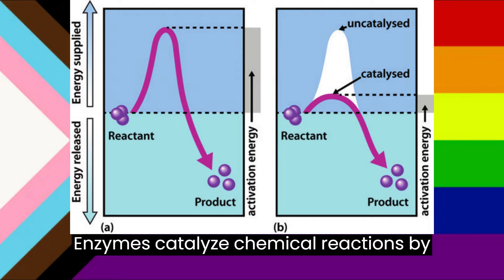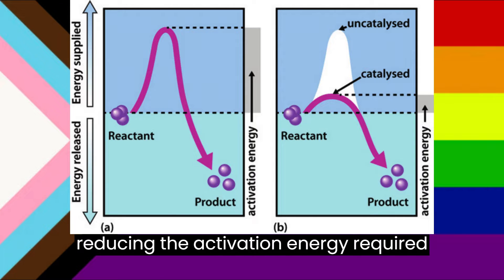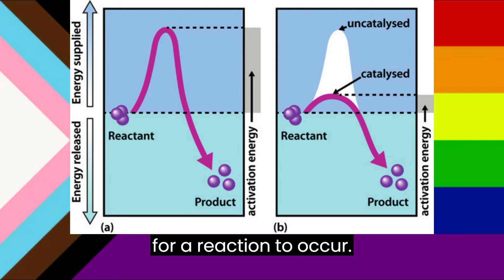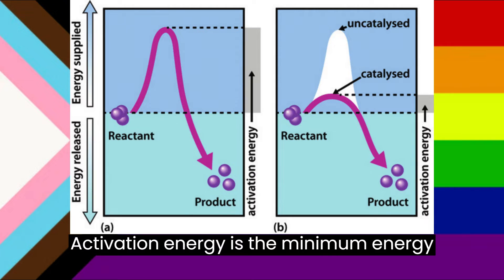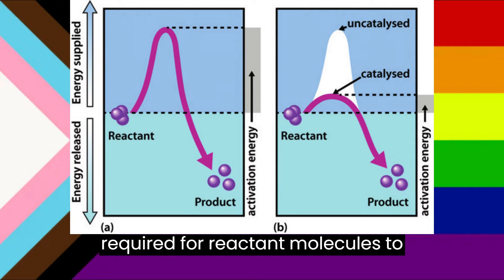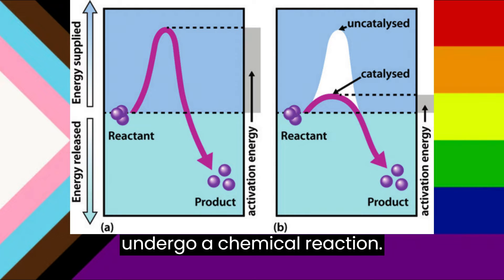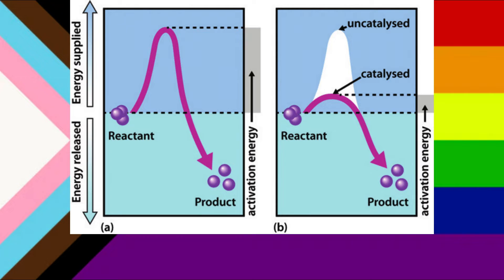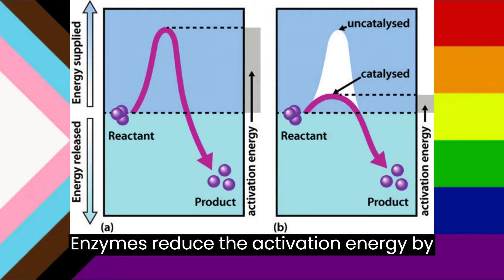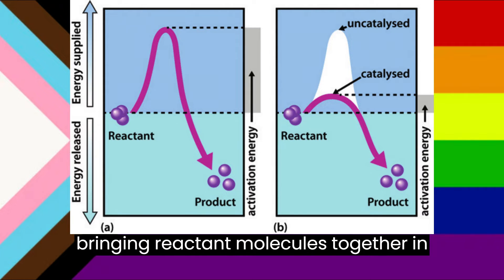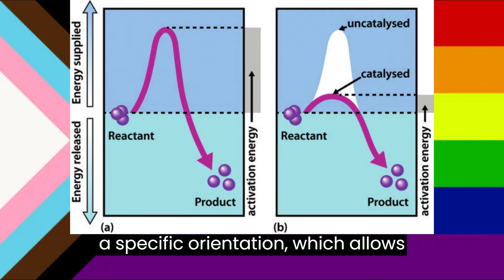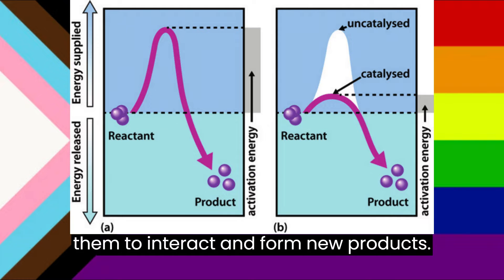Enzymes catalyze chemical reactions by reducing the activation energy required for a reaction to occur. Activation energy is the minimum energy required for reactant molecules to undergo a chemical reaction. Enzymes reduce the activation energy by bringing reactant molecules together in a specific orientation, which allows them to interact and form new products.